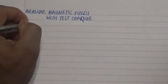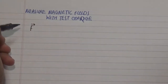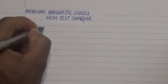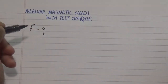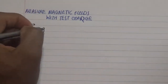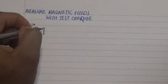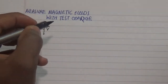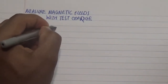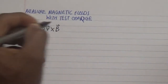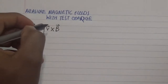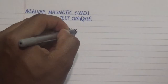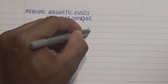Looking at this formula, which we dove into in our previous video, we realize that the force is determined by the product of the quantity of our charged particle multiplied by the cross product of the velocity of the moving charged particle and the magnetic field. This gives us the magnetic force on a moving charged particle.